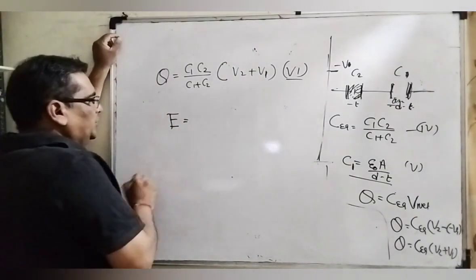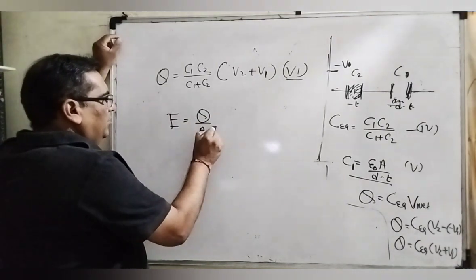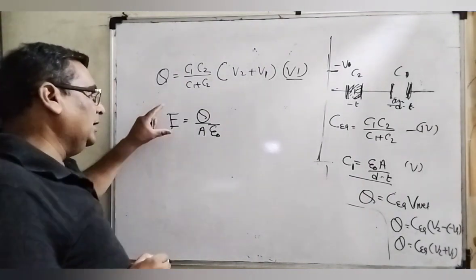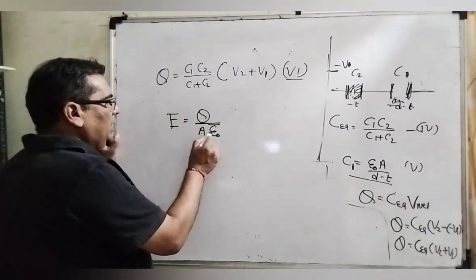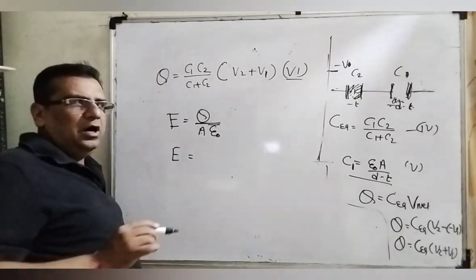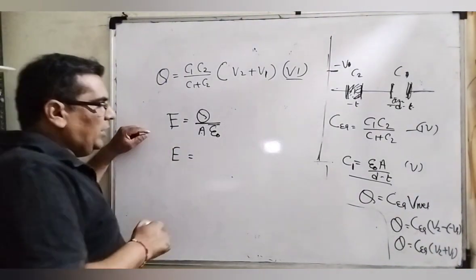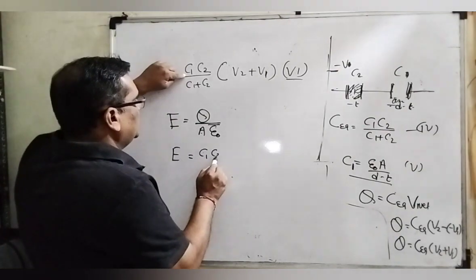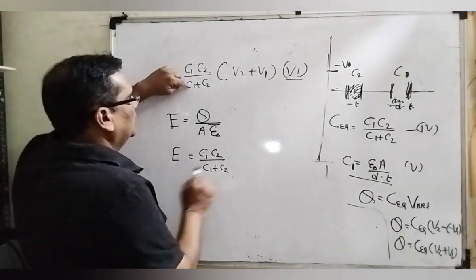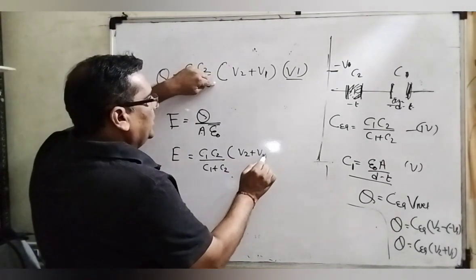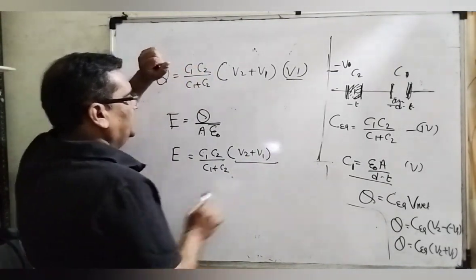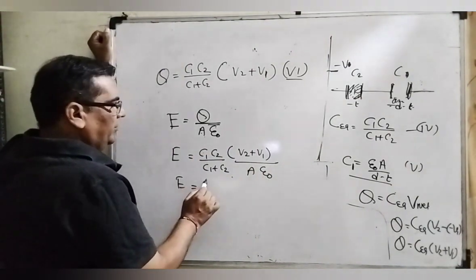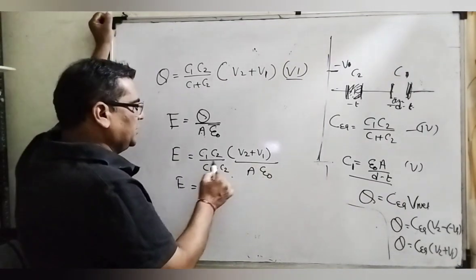Now substitute the value of equivalent capacitance. Q equal to what is the equivalent capacitance, C1 C2 upon C1 plus C2 into bracket V2 plus V1. This is equation number 6. You know that very well what is the electric field.